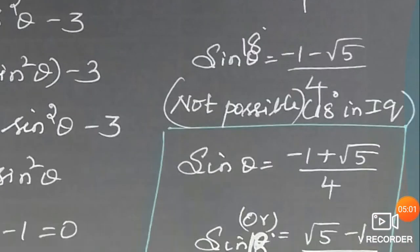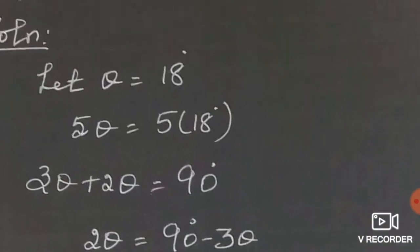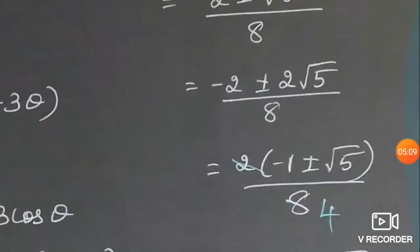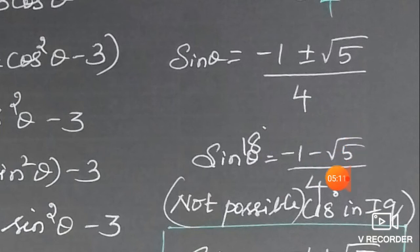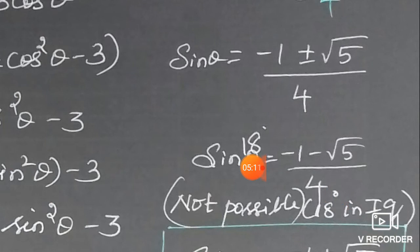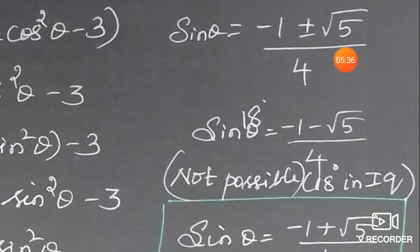Since θ = 18°, which lies in the first quadrant, all trigonometric values are positive. The value (−1 − √5)/4 is completely negative — since √5 ≈ 2.236, this gives approximately −3.236/4, which is negative. So we discard this value.